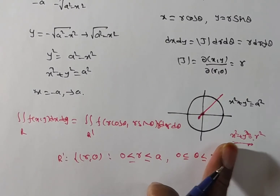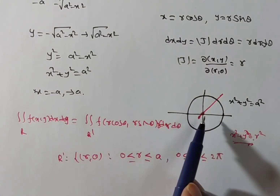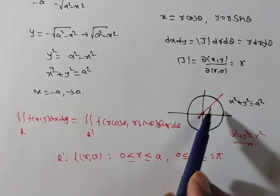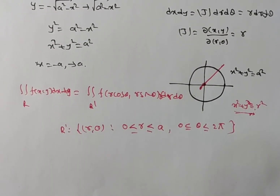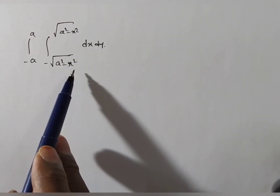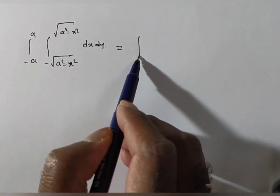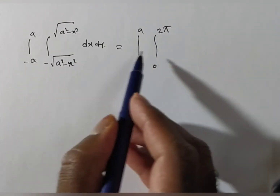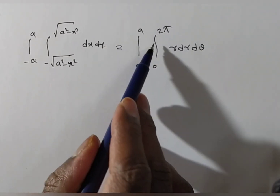So the given problem, converting into polar coordinates, has limits: r from 0 to a, and theta from 0 to 2 pi. The dx dy becomes r dr d theta. Here the integrand is r and the limits of r and theta are both independent, so we can evaluate them in either order or simultaneously.